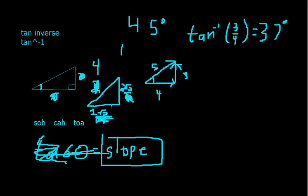The big thing I want you to take out of this is that tangent takes an angle and gives you a slope. And more importantly, inverse tangent — which is confusing a lot of people — inverse tangent takes a slope and gives you back an angle. Hopefully you got something out of this video. Next video, I'm going to start teaching vectors and a better way to look at it than the way that I think the physics teacher teaches. I'll see you then.